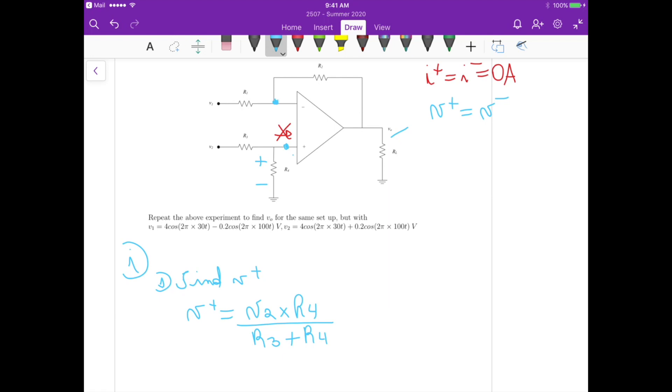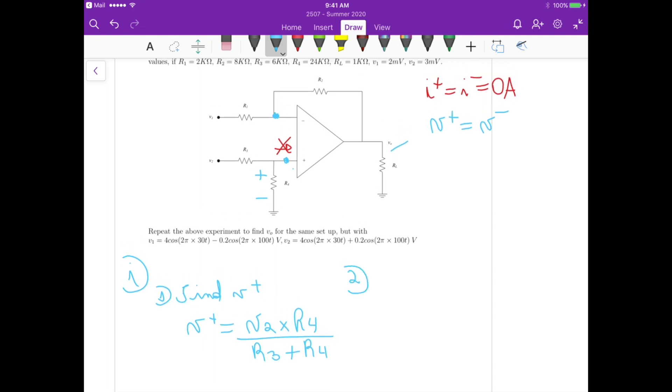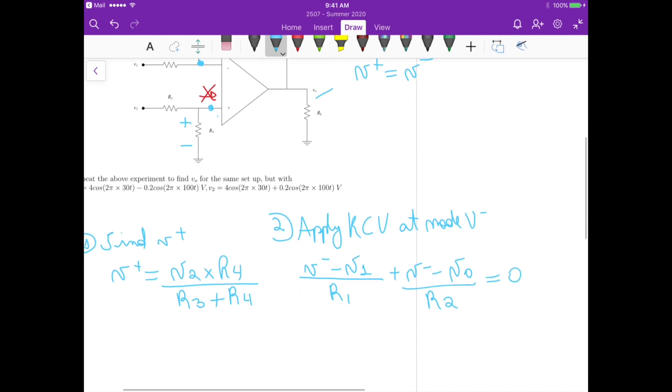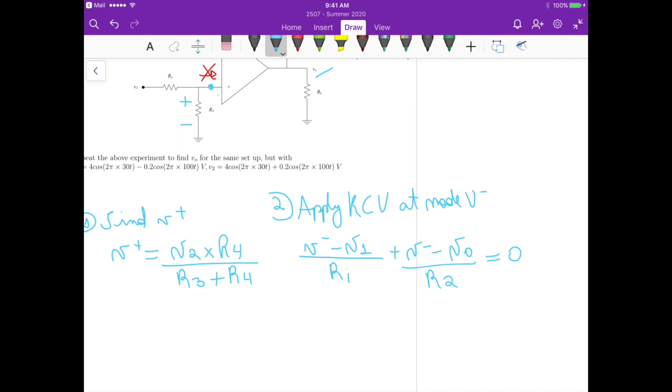So for the second step, apply KCL at node V minus. So applying KCL at node V minus, this gives us V minus minus V1 divided by R1, plus V minus minus V out on the feedback loop divided by R2, that equals to 0. So if we manipulate this second equation here.